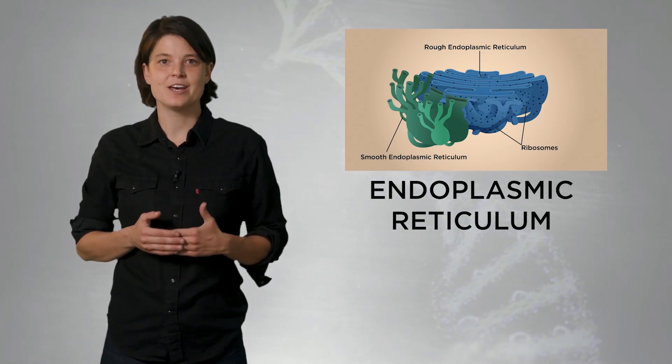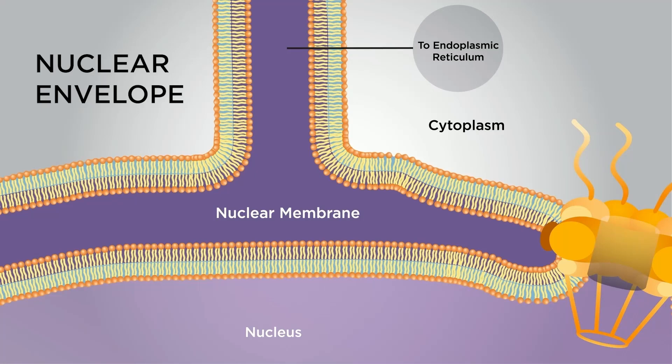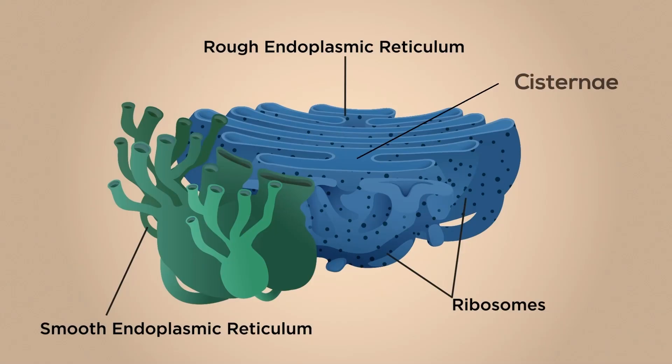The endoplasmic reticulum is a vast network of membranes, folded into flattened pouches called cisternae. The outer layer of the nuclear envelope is continuous with the endoplasmic reticulum. There are two different types of endoplasmic reticulum: the rough ER, as just mentioned, and the smooth ER.